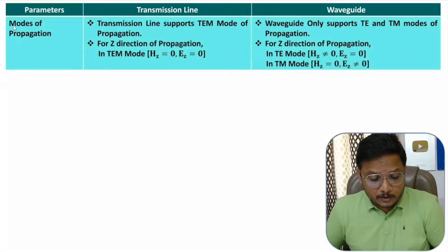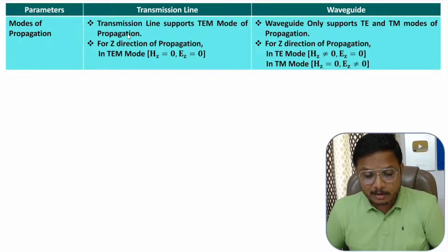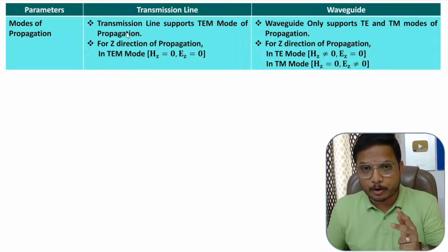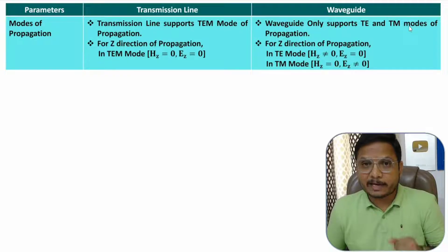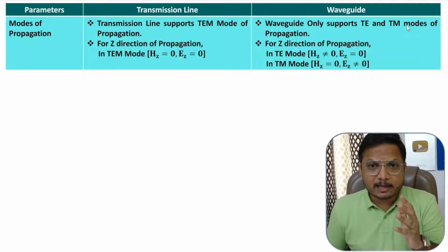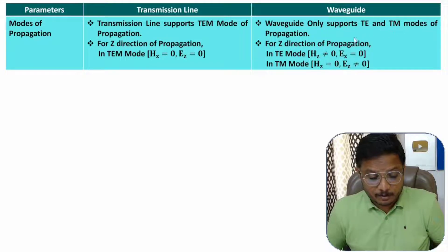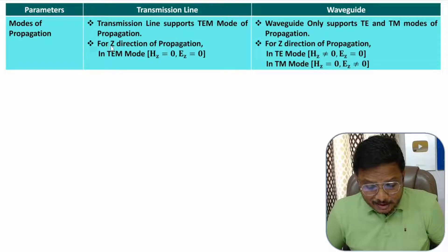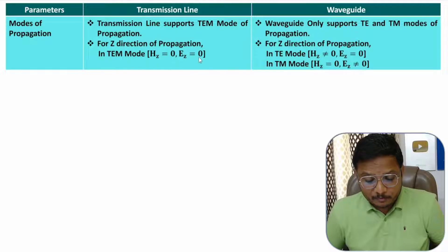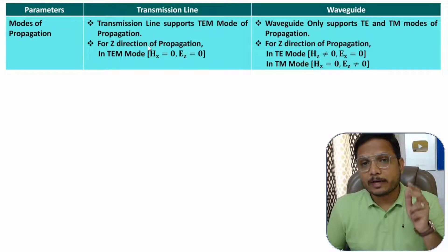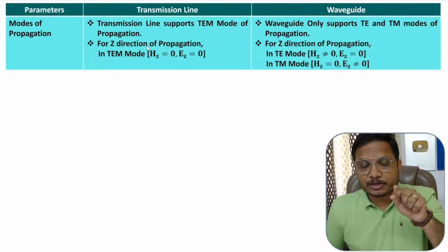Next, comparing based on modes of propagation: in a transmission line we have TEM mode, which stands for Transverse Electromagnetic mode. If the direction of signal propagation is the z-direction, then in TEM mode the magnitude of the electric field and magnetic field in the z-direction will be zero — meaning both fields are perpendicular to the direction of propagation.